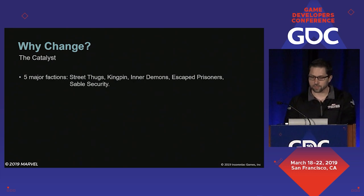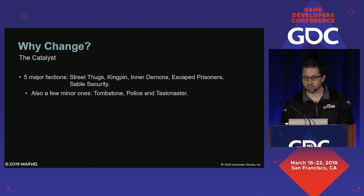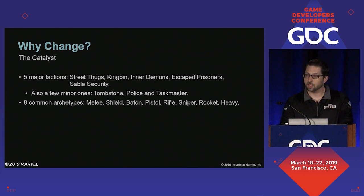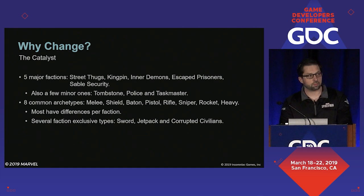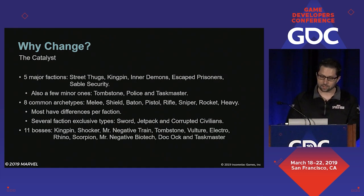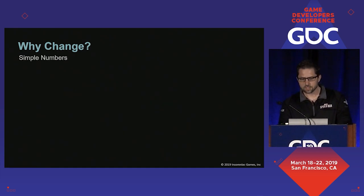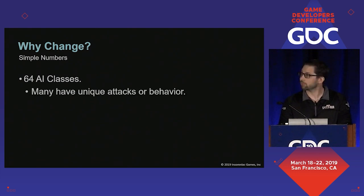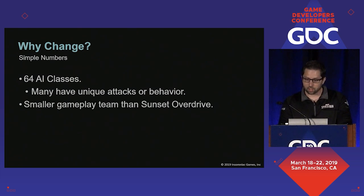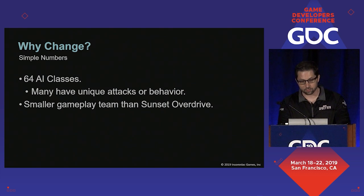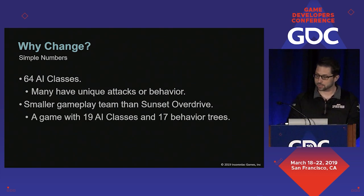Spider-Man has five major factions and a few minor ones. We've also got eight archetypes that are common to all the factions, and the majority of these archetypes have variations per faction. There are also several faction exclusive types and 11 boss fights. This all meant that we had to create 64 AI classes, and the majority of these had to have some unique attacks, reactions, or other behaviors. We also had to do this with a slightly smaller gameplay team than our last big game, Sunset Overdrive, in which we only made 19 classes.